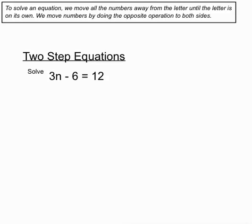With two-step equations, here's an example. We are asked to solve 3N minus 6 equals 12. Now there's quite a bit happening in this equation. We have a choice. There seems to be two numbers here that we need to move away from the letter on the left-hand side. There's a 3 that's multiplying by the N, and there's a 6 that's being subtracted from the N.